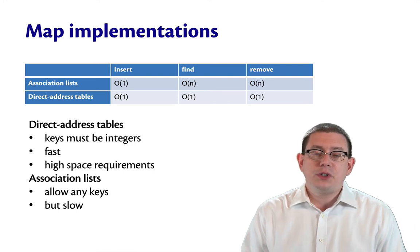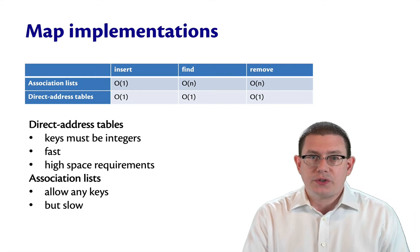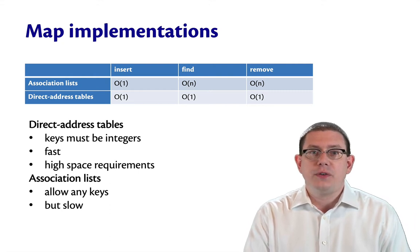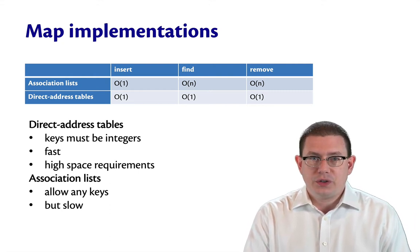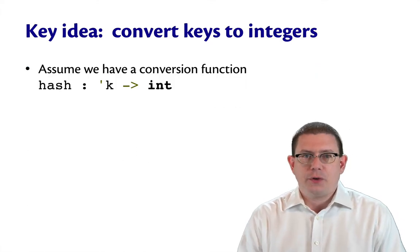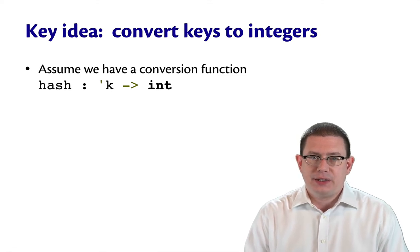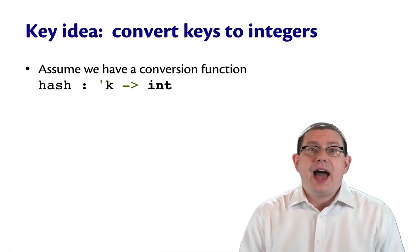So the first basic idea of being able to combine these two data structures is to convert keys to integers. Let's assume we have such a conversion function that can map from whatever the key type is to an int. That's what we call the hash function.